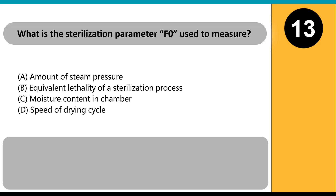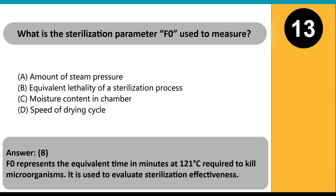What is the sterilization parameter F0 used to measure? A. Amount of steam pressure. B. Equivalent lethality of a sterilization process. C. Moisture content in chamber. D. Speed of drying cycle. Answer: B. F0 represents the equivalent time in minutes at 121°C required to kill microorganisms. It is used to evaluate sterilization effectiveness.